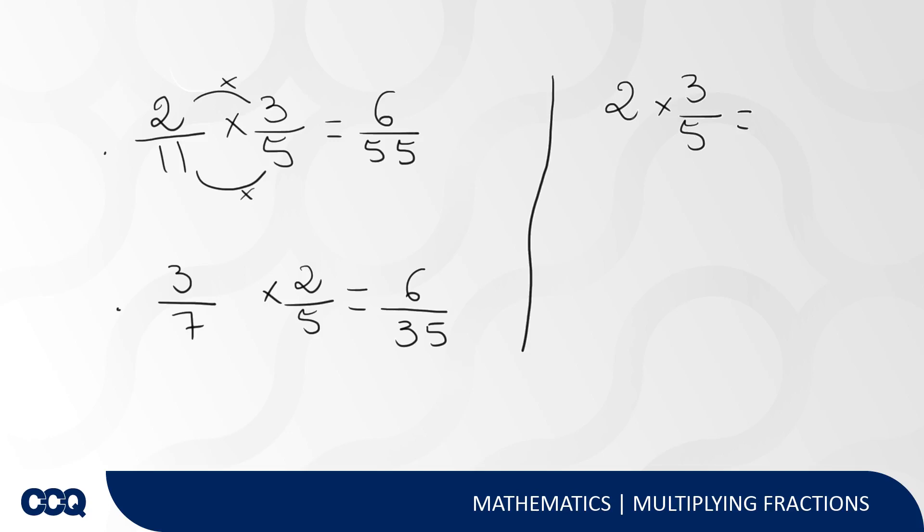In this case when you have 2 times 3 over 5, you'll just put 1 as the denominator under the 2. Then you are going to multiply the same way, which is going to give you 6 over 5.